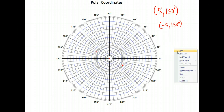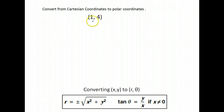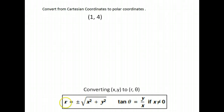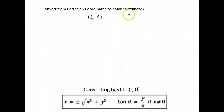We are going to work on converting from Cartesian coordinates — the way we're used to seeing it — into polar coordinates. We've used these formulas in previous lessons: r is plus or minus the square root of x² + y² for our point (x, y), and tangent θ equals y over x. In order to put a point into polar coordinates, we need to find r and we need to find θ.